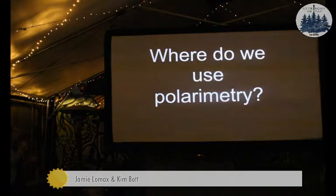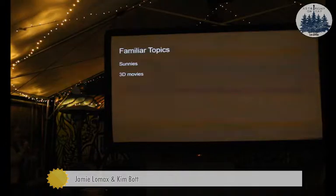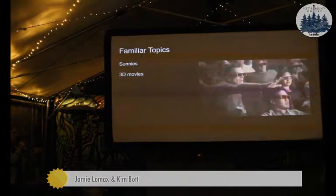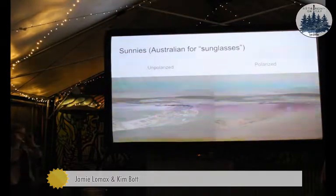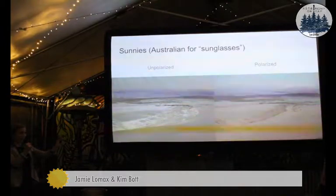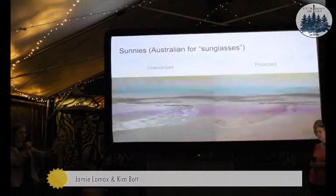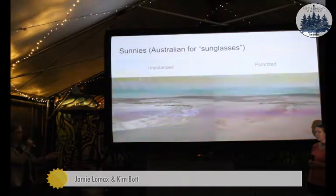We actually use polarimetry in our everyday lives. You might use polarized light with your sunnies — that's Australian for sunglasses — and you might use it when you watch a 3D movie as well. If you go to the beach and you have polarized sunglasses, you might hold them up and if there's a lot of glare coming off the water, your polarized sunglasses will cancel that out — it'll erase that polarized light. But because this is directional information, if you turn your glasses to the side, it'll let that polarized glare through, because that's polarized light bouncing off the water.